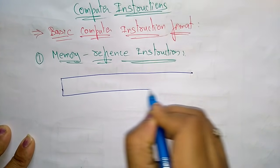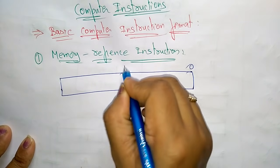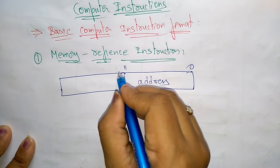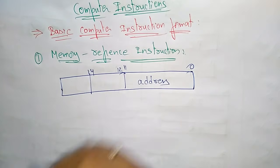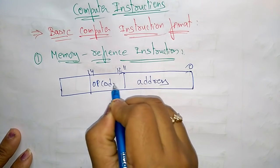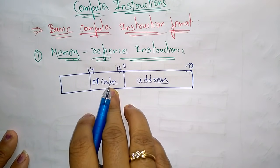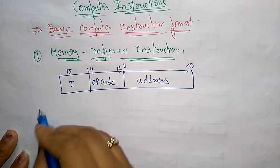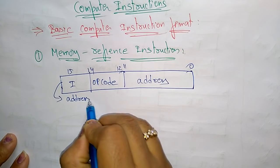This is a 16-bit register. Bits 0 to 11 hold the address of the memory where the data has to be stored. Bits 12 to 14 — these three bits — indicate the opcode, meaning what operation has to be performed. The last bit, bit 15, is the I-bit, which indicates the addressing mode.